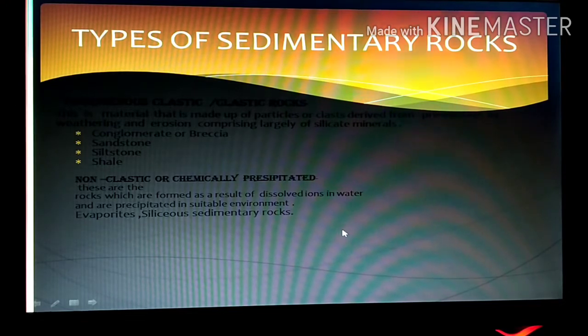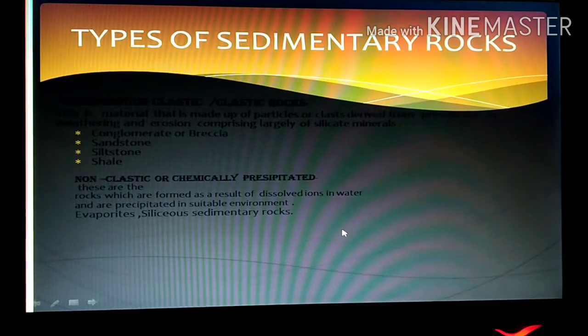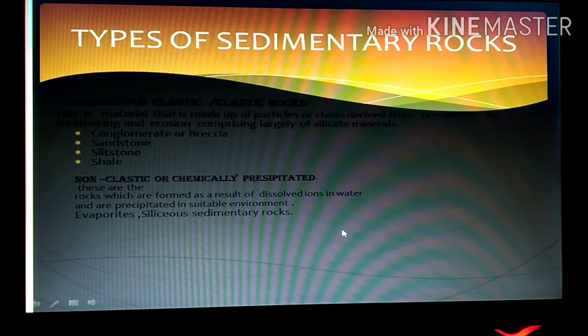The other category of the rock is non-clastic or chemically precipitated. These are the rocks which are formed as a result of dissolved ions in water and are precipitated in suitable environment. Example evaporites, siliceous sedimentary rock.